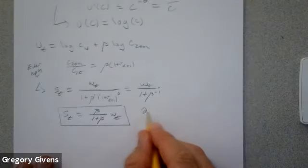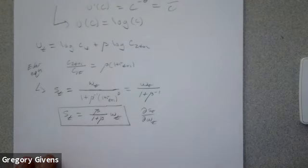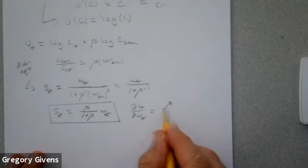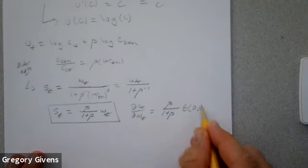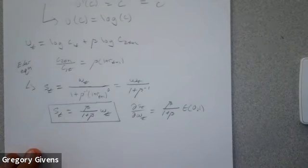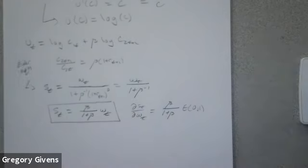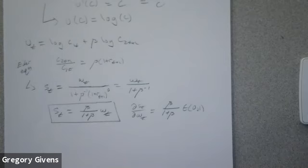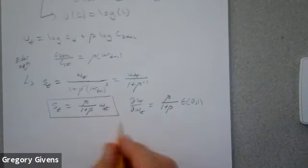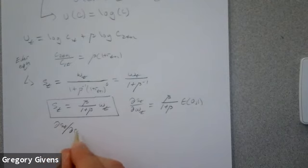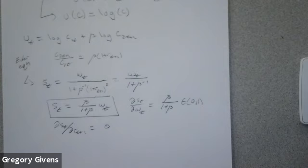What is the savings rate? The partial of S with respect to W_T equals beta/(1+beta), which is between 0 and 1 — and more importantly, it is fixed and constant. In a world with logarithmic preferences, a unit increase in the wage increases optimal savings by a constant amount. The savings rate is constant when income and substitution effects offset one another. A constant savings rate makes this model observationally equivalent to the Solow model. The partial of S with respect to R_{T+1} is zero — changes in the real interest rate have no impact on the optimal savings decision.